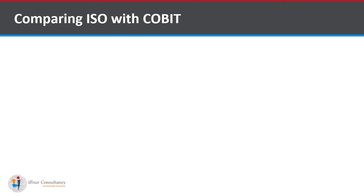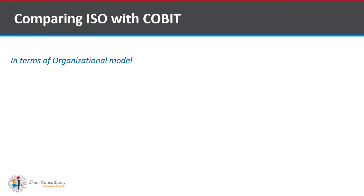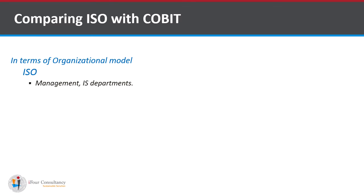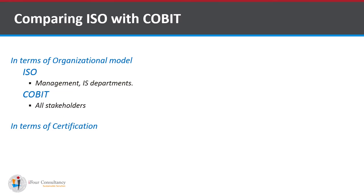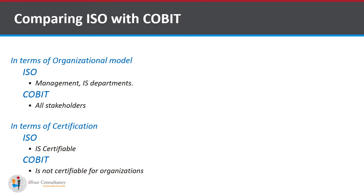Comparing ISO with COBIT in terms of organizational model and certification: ISO is designed for management and IT departments, while COBIT is designed for all stakeholders. Regarding certification, ISO is certifiable, whereas COBIT is not certifiable for organizations.